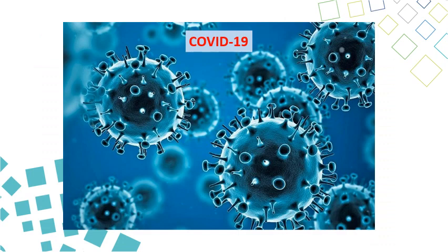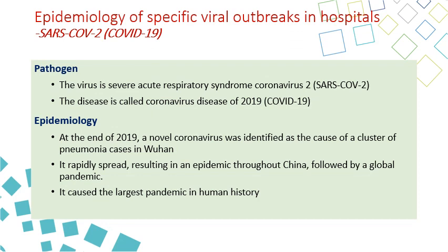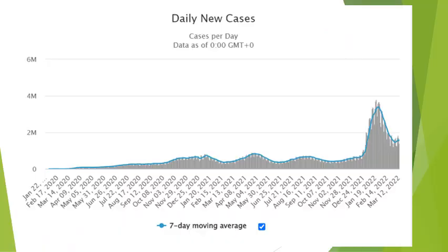SARS-CoV-2 or COVID-19 was discovered in Wuhan, China in December 2019, and since then it spread around the world, causing one of the largest pandemics ever known in human history. The epidemic curve shows waves starting from January 2020 through March 2022, generally increasing in size across the world until decreasing by the end of 2022.